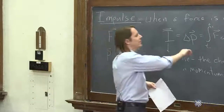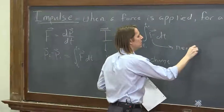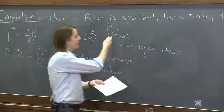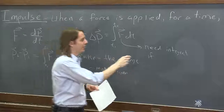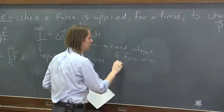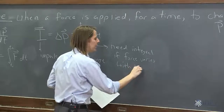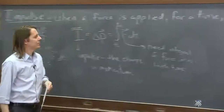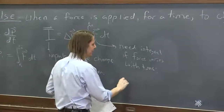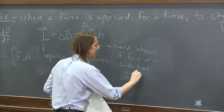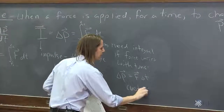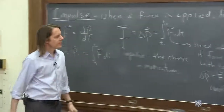You might see it written without the integral. You need the integral if the force varies with time. If the force does not vary in time, then it's just F times delta T. So you could also say delta P equals F times delta T for a constant force applied for some time.